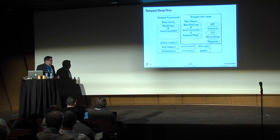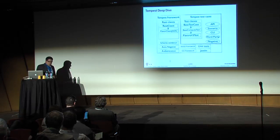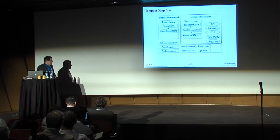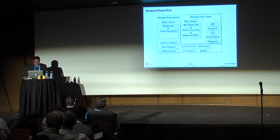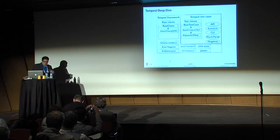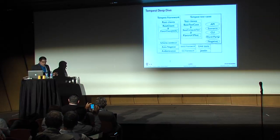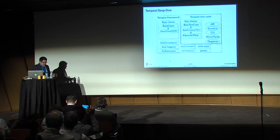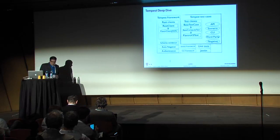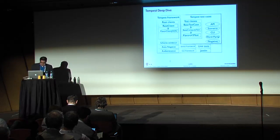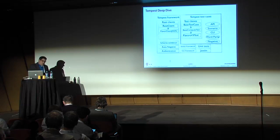We have stress tests, which are a special case. There's also a CLI framework because we execute shell commands that need to be parsed. Tempest itself has unit tests, just like all other OpenStack projects. Javelin is a process for Grenade to create artifacts — since Grenade is an upgrade framework, we want some artifacts in the system that we can test against.